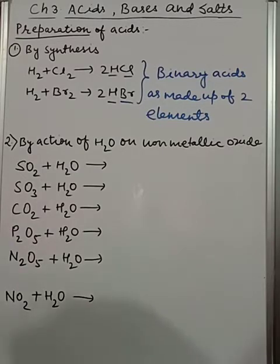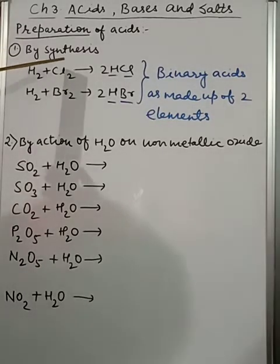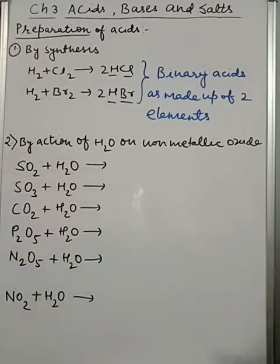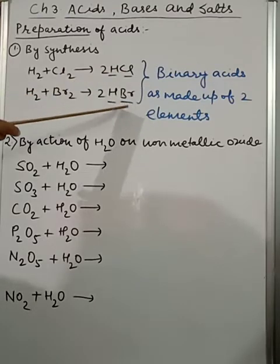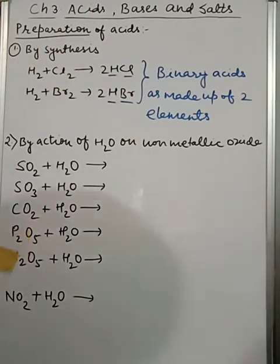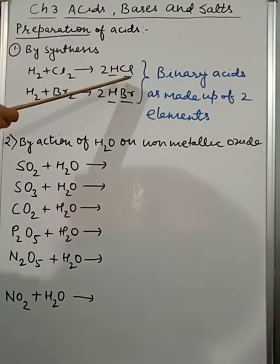First, we'll start with the process of synthesis. All of you know synthesis means combination. So here you can see I have taken two elements, that is H2 + Cl2 and H2 + Br2. By combining these two, we are getting binary acids HCl and HBr. Why am I calling them binary acids? Because children, they are composed of only two elements, that's why the name is binary acids.